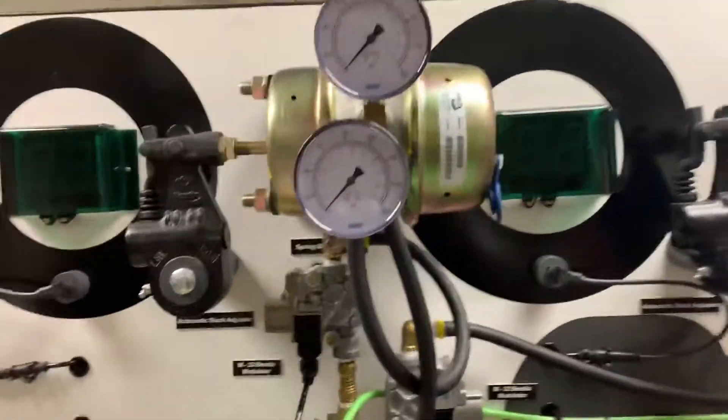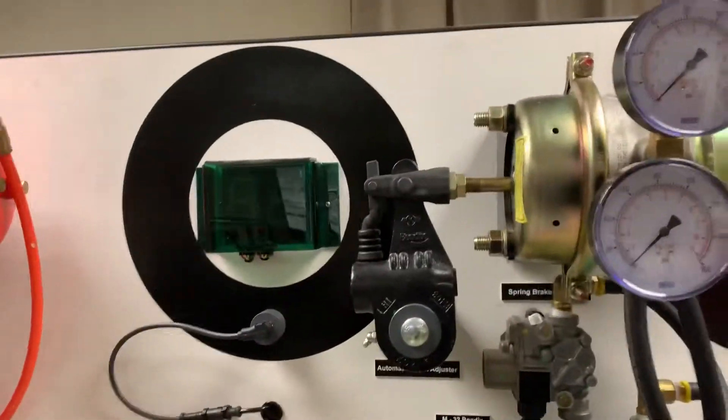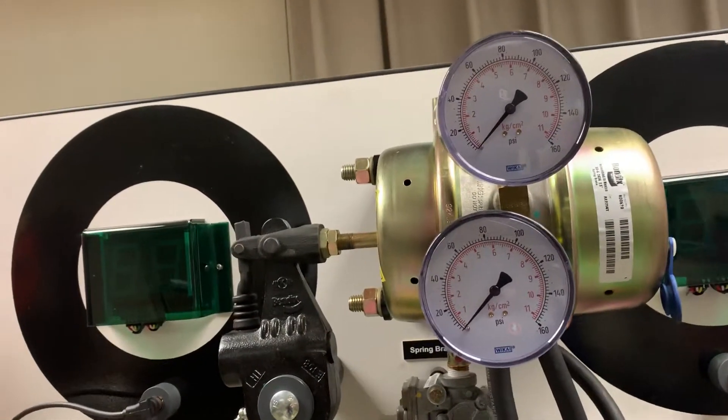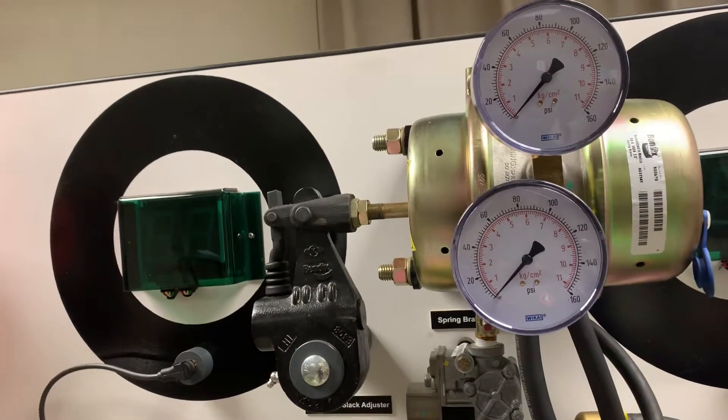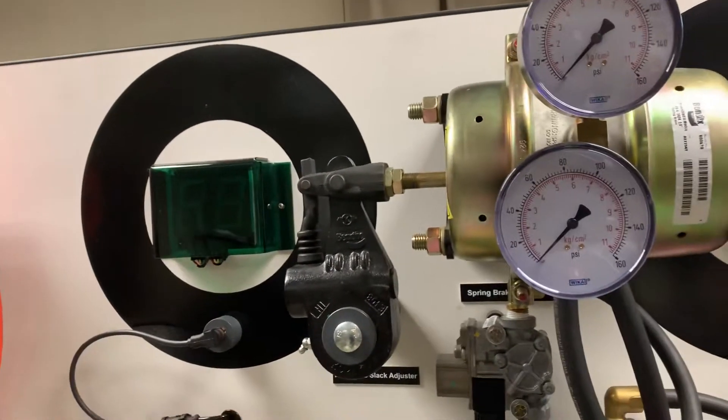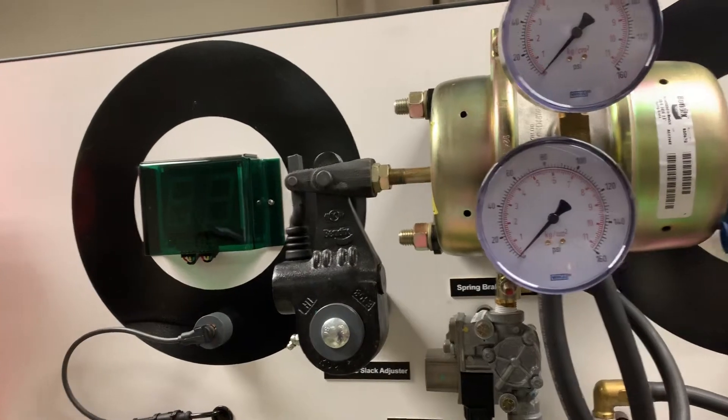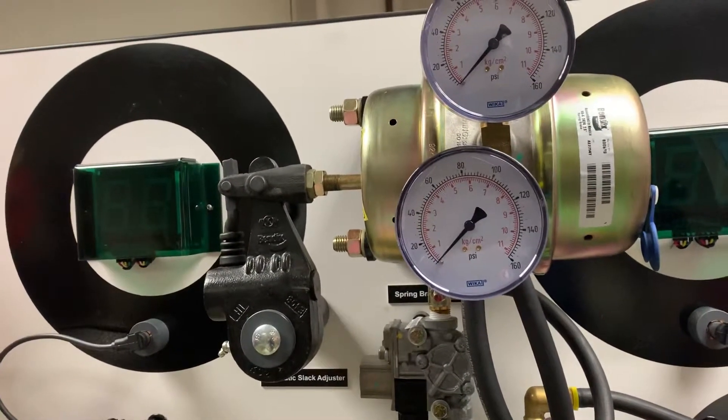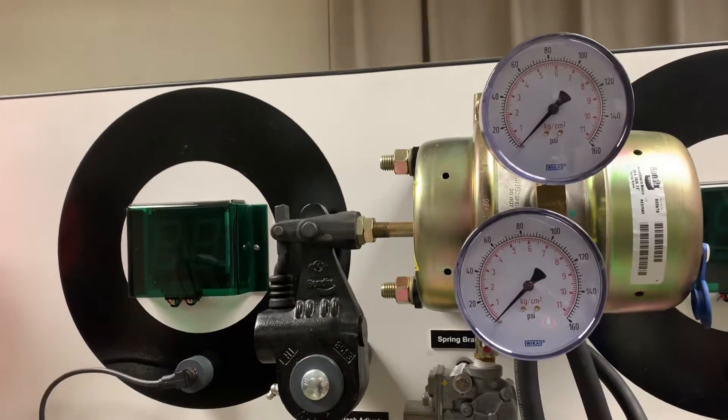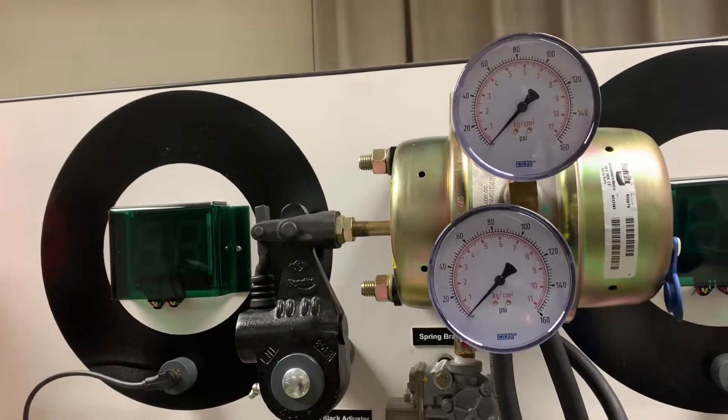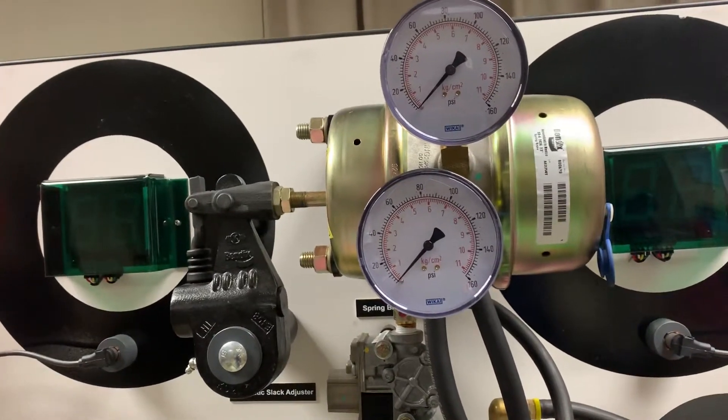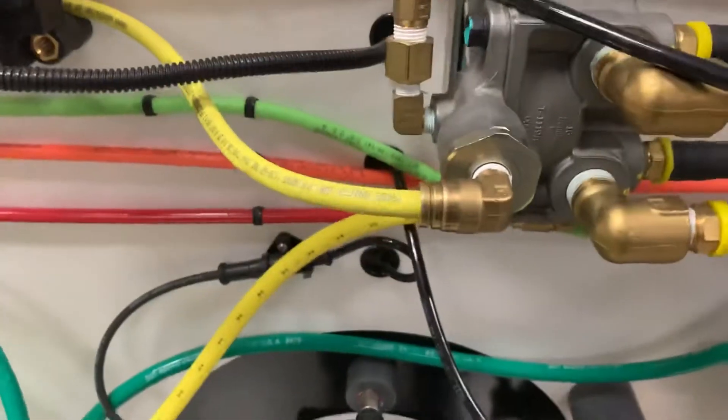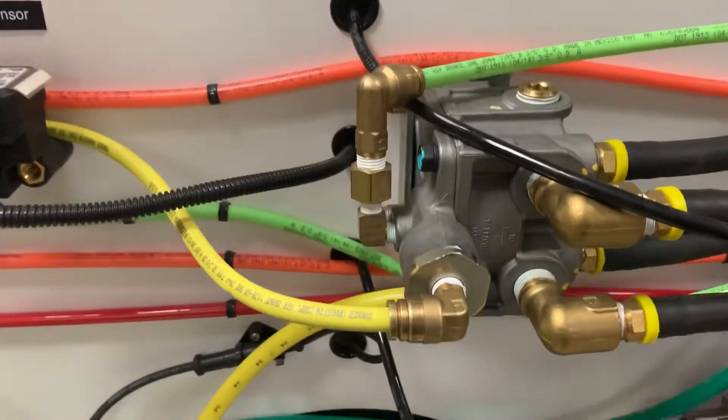And so what does that mean? We pneumatically cage the parking brake side while applying 60 pounds of pressure to our service side. So basically we split the application so that we did not compound the braking force that was present inside of the brake hand. And that's basically the role of the anti-compounding feature inside of this R14 valve.